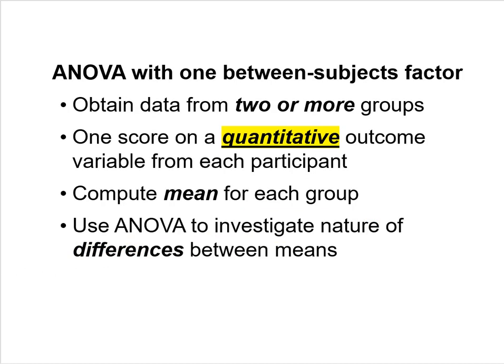We perform this kind of ANOVA when you've conducted an investigation with two or more groups of subjects, where each subject has provided one score on a quantitative outcome variable. You compute the mean score for each group of participants on your outcome variable, then use ANOVA to investigate the nature of the differences between those means.